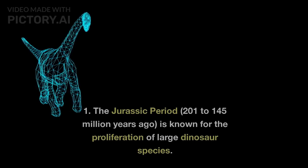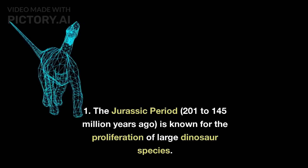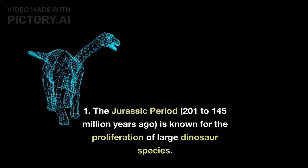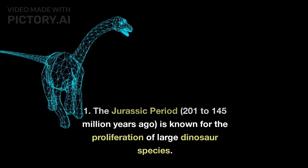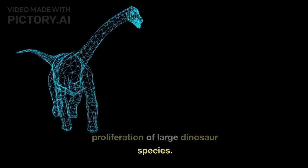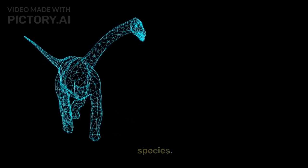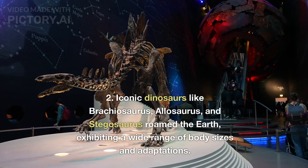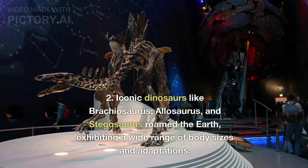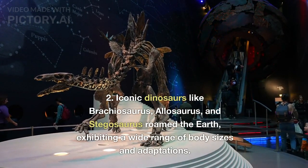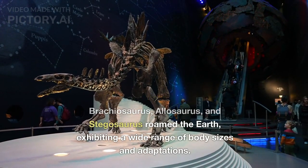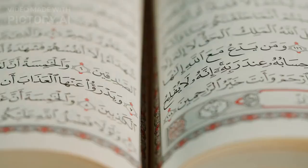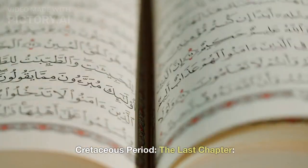Jurassic Period: Age of Giants. The Jurassic Period, 201–145 million years ago, is known for the proliferation of large dinosaur species. Iconic dinosaurs like Brachiosaurus, Allosaurus, and Stegosaurus roamed the Earth, exhibiting a wide range of body sizes and adaptations.